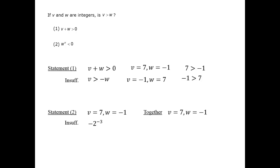And if w is negative and v is positive, that means in all allowed cases, v will be greater than w. We can answer the question, therefore, definitively in the affirmative. We have sufficient information together. And the correct answer is C.